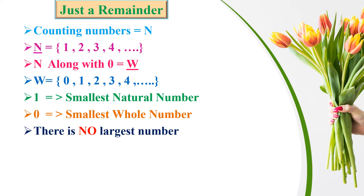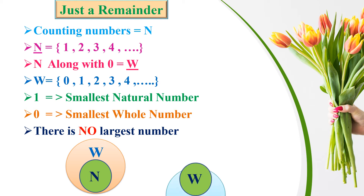There is no largest number. Natural numbers are inside the set of whole numbers — that is correct. Zero along with natural numbers is called whole numbers. Whole numbers are not inside natural numbers — that is wrong.